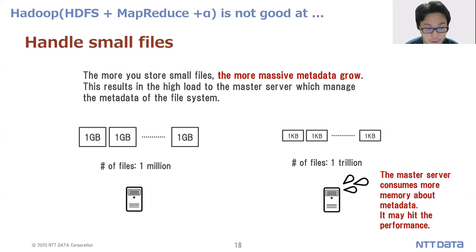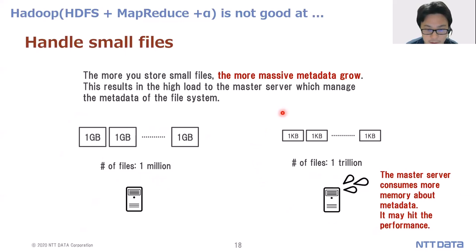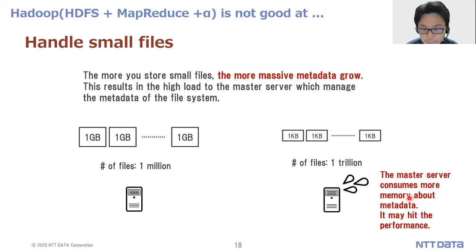For example, on the left side there are many 1GB files and the number of files is 1 million. On the right side, there are many 1KB files and the number of files is 1 trillion. The total size of data is the same, but the master server consumes much more memory for metadata on the right side. This might hurt the performance of the file system.